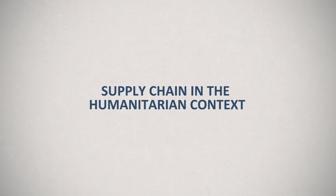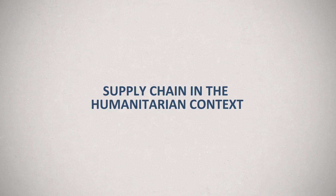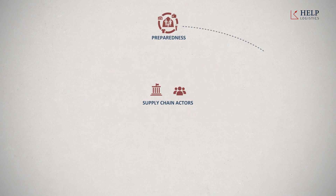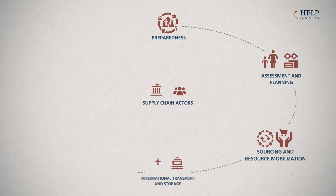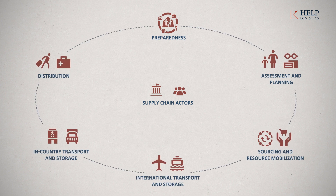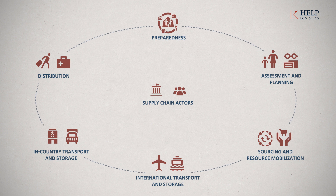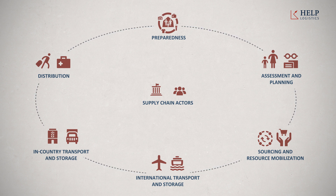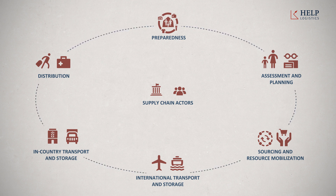The supply chain is an interconnected system involving flows of goods, people, data, and funds. High-performing and resilient supply chains are the lifeline for economic development and growth in countries. Equally, they ensure societies and communities are more resistant towards shocks and disruptions when natural disasters or man-made conflicts cause humanitarian crises.